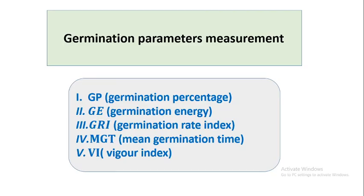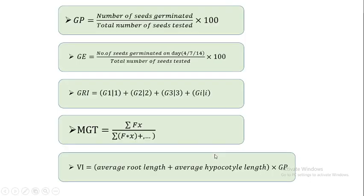Hi viewers, this tutorial is about seed germination parameters measurement — for example, germination percentage, germination energy, germination rate index, mean germination time, and vigor index. Let us see the formulas and how we calculate seed germination parameters.